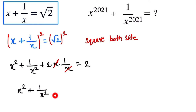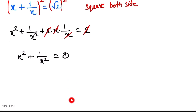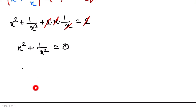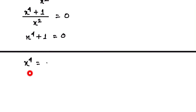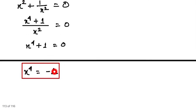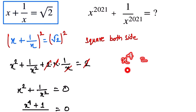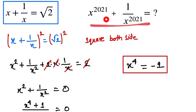The 2 and 2 cancel out, so x² + 1/x² = 0. Now we take the LCM, giving us x⁴ + 1 over x² = 0, which means x⁴ + 1 = 0. Therefore x⁴ = -1. This is a key result we will use.